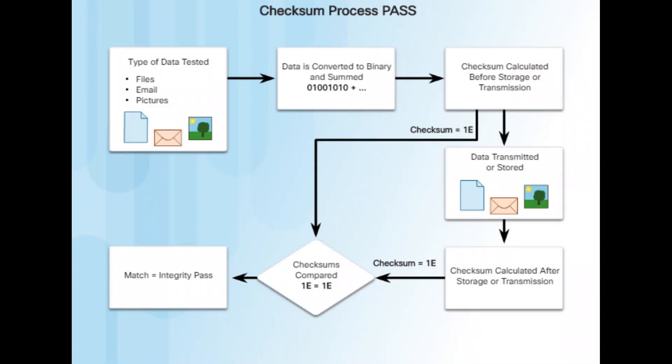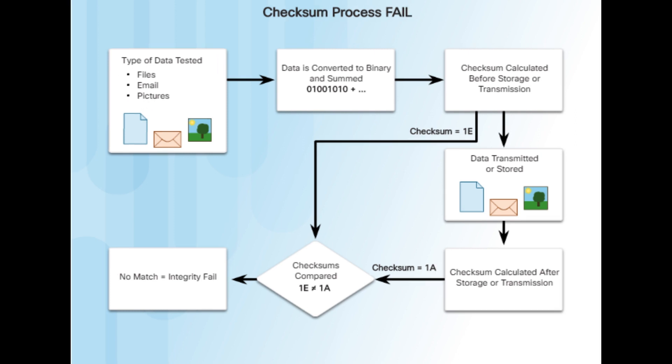If the two sums are equal, the data is valid (figure 1). If they are not equal, a change occurred somewhere along the line (figure 2).